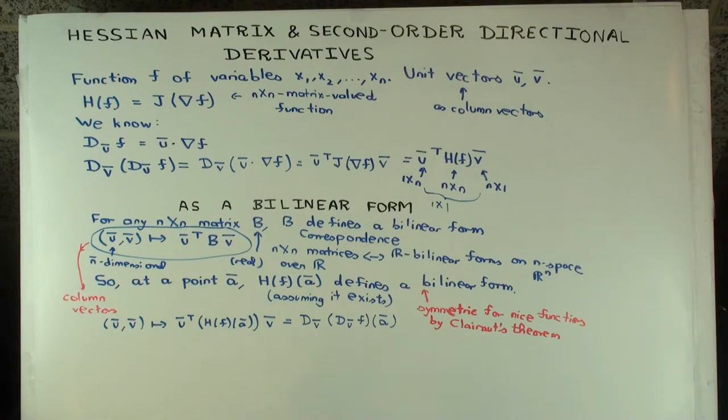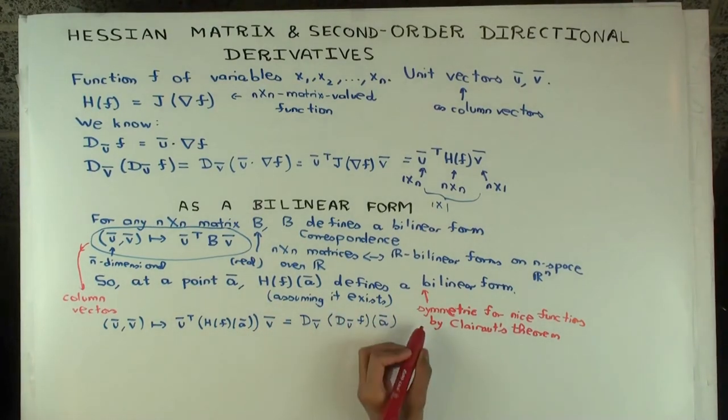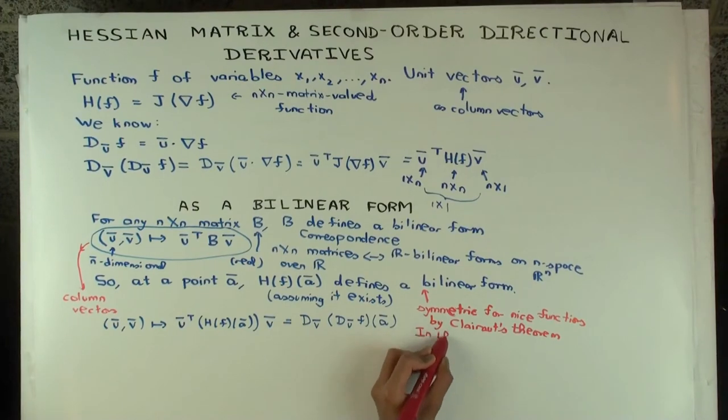So this is symmetric as a form, which means that in this case, so in the nice functions case, so when the Hessian varies continuously, what can we conclude? We can conclude that the directional derivatives are actually symmetric in the inputs.